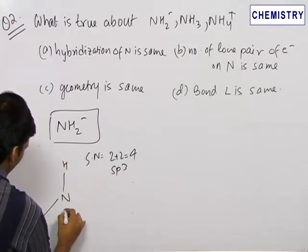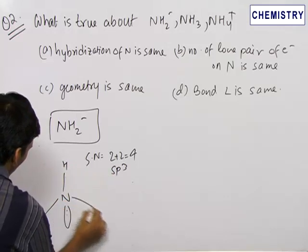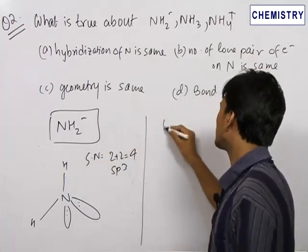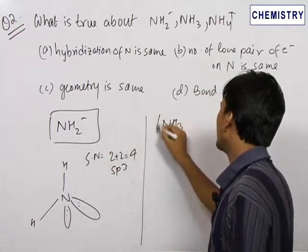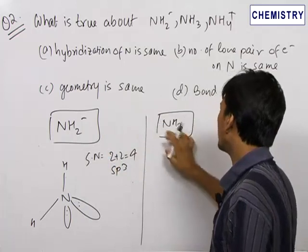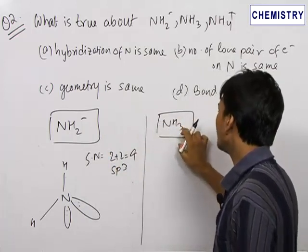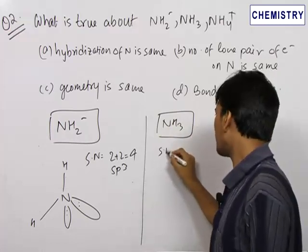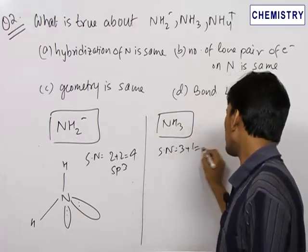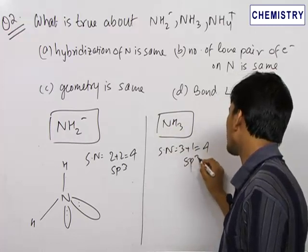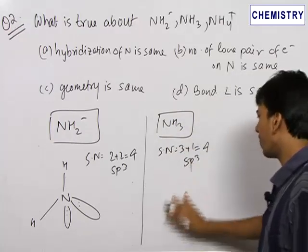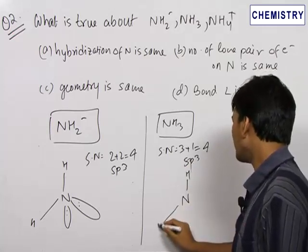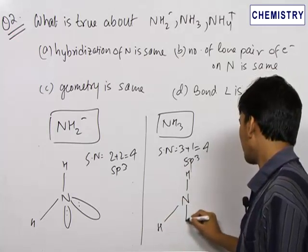One H here, one H here, one lone pair here and one lone pair here — that gives us the structure for NH₂⁻. Now for NH₃, nitrogen has five electrons in its outermost shell. It will bond with three of them to complete its octet and will have one remaining lone pair. Therefore, the steric number will be 3 plus 1 equals 4 again. The hybridization will be SP3, and the geometry will again be tetrahedral.